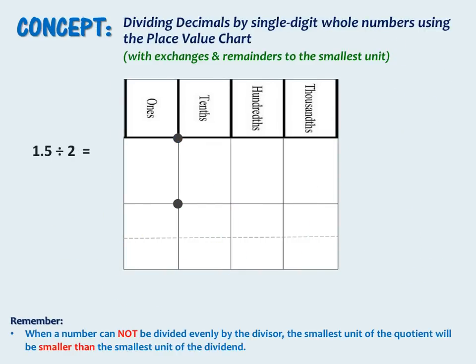In this last example we will have to unbundle again, and we're also going to see what happens when a number cannot be divided evenly — that's when we're left with a remainder. Our problem is 1 and 5 tenths divided by 2. We have 1 in the units place and 5 in the tenths place. Now we have to divide those into 2 equal groups. 1 cannot be divided evenly into 2 groups, so we have to unbundle. We take this 1 from the units place and make it into 10 tenths.